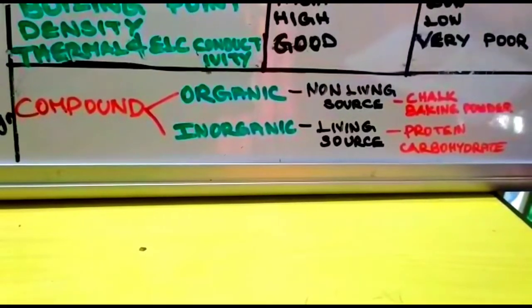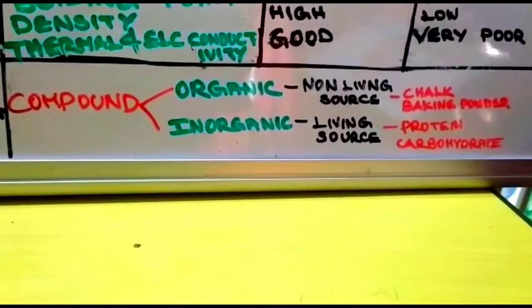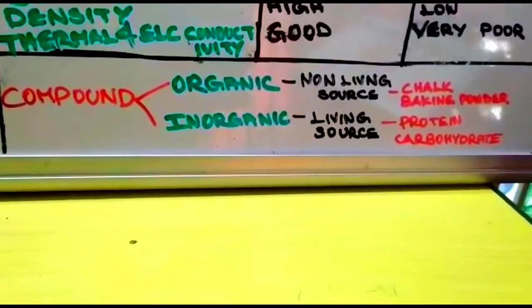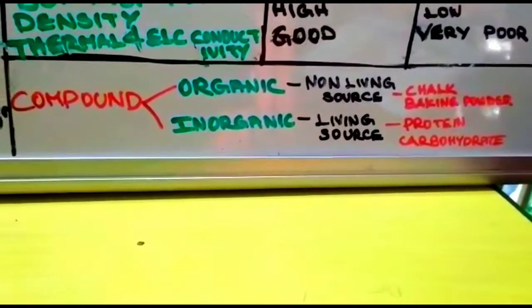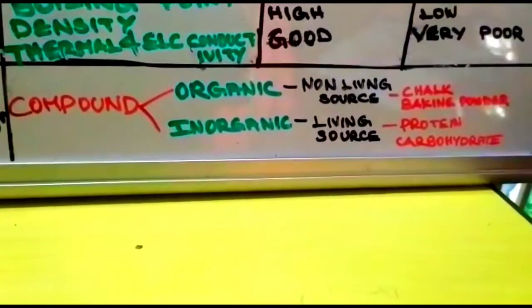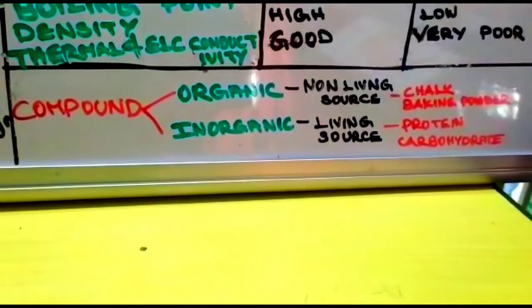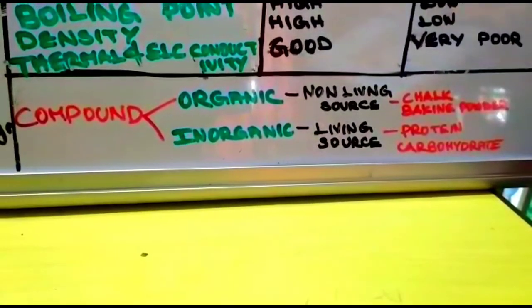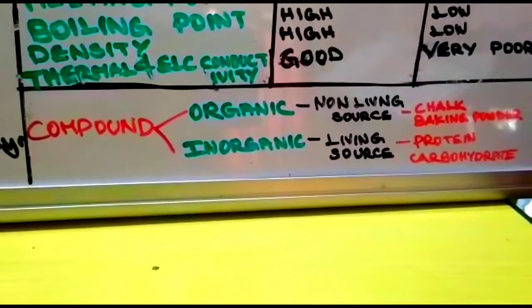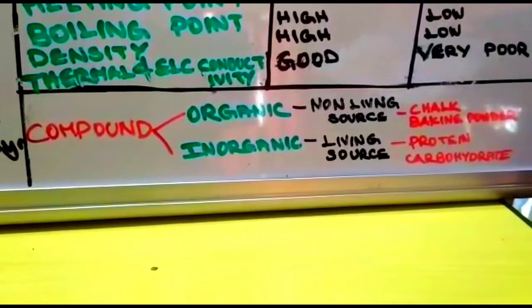What are the uses of these compounds? Water is essential for drinking and has hydrogen and oxygen. Its chemical name is dihydrogen monoxide. Table salt, or sodium chloride, has sodium and chlorine. It's used as a preservative and taste enhancer. Sugar or sucrose has carbon, hydrogen, and oxygen.